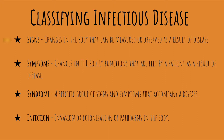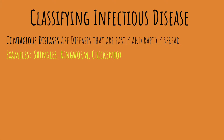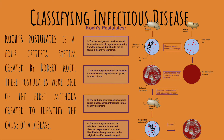Signs are changes in the body that can be measured or observed as a result of disease — the changes that influence a patient to see a physician. Symptoms are changes the patient feels as a result of having a disease. Syndrome refers to a specific group of signs and symptoms that accompany a disease. Infection refers to the colonization or invasion of pathogens in the body. Contagious diseases are easily and rapidly spread by direct contact, secretions, or objects touched by an infected person.